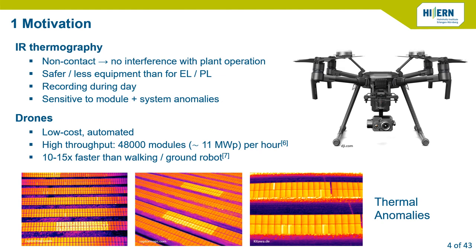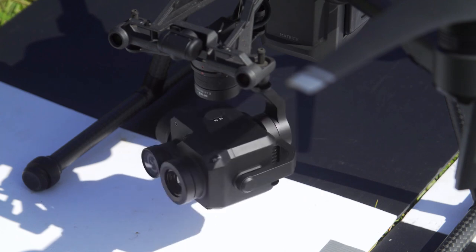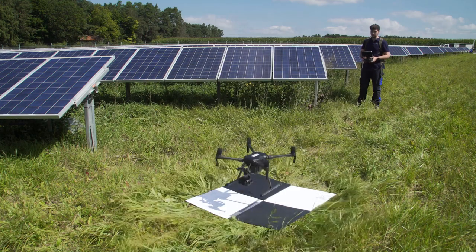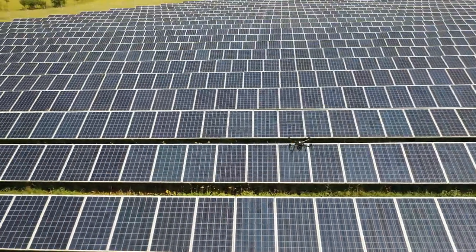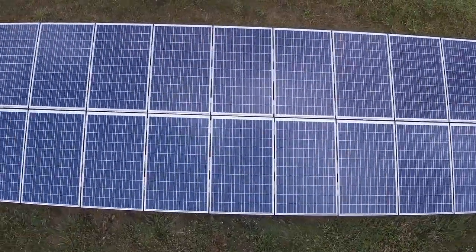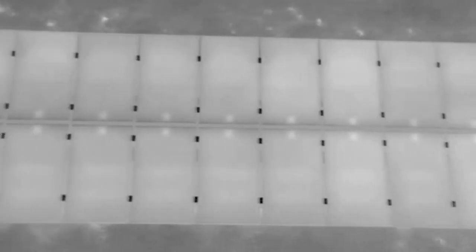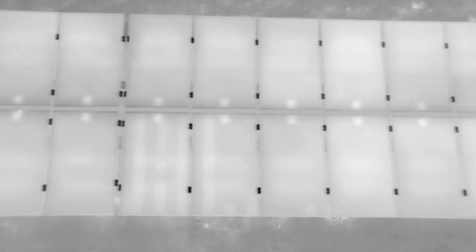Small drones are popular because they are relatively low cost — about €20,000, which is very cheap compared to a helicopter. They can be fully automated with waypoint flights, and help achieve high throughputs of about 48,000 modules, equivalent to 11 megawatt peak per hour — about 10 to 15 times faster than walking or ground-based systems. When recording data, we fly over the plant, scan the rows sequentially, and get footage in both RGB and thermal infrared at about 9 Hz. You can see some anomalies popping up in this kind of footage.